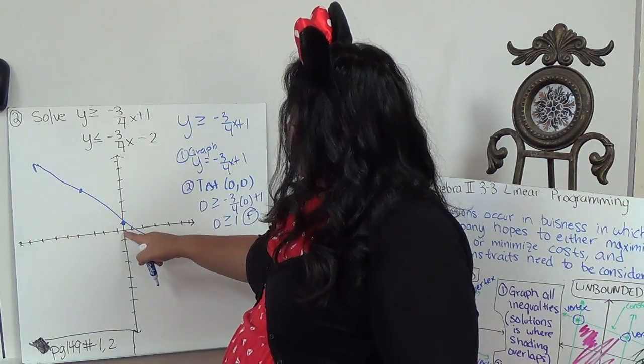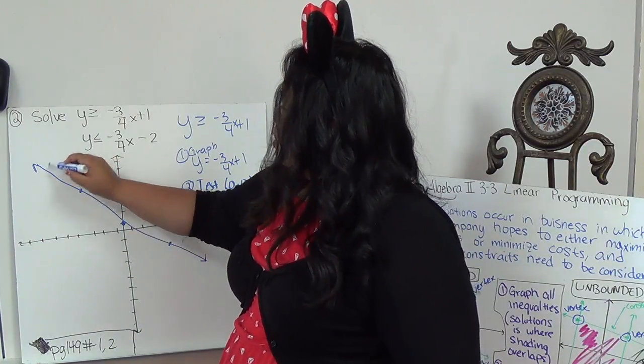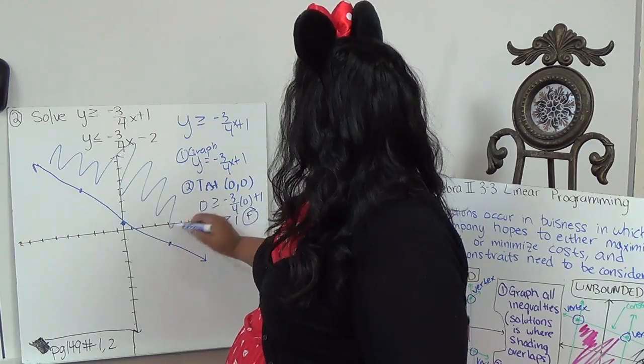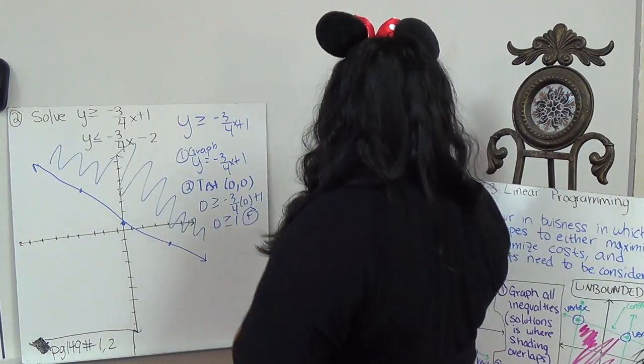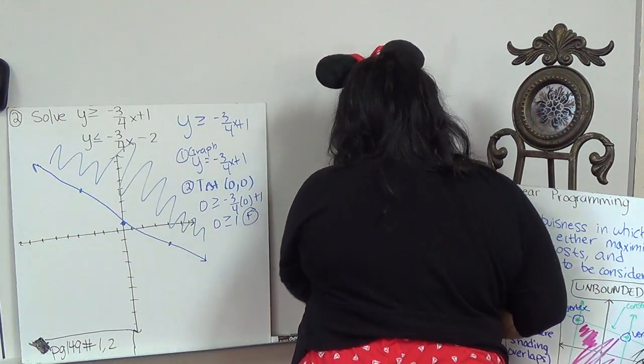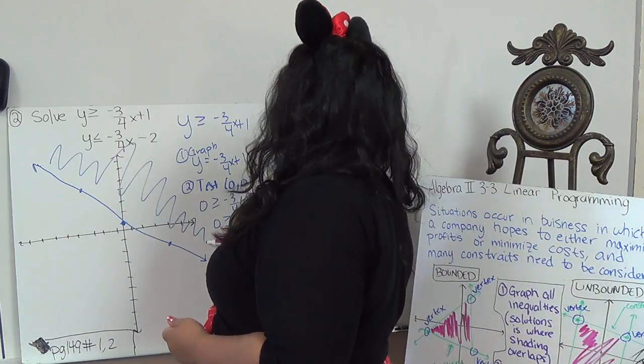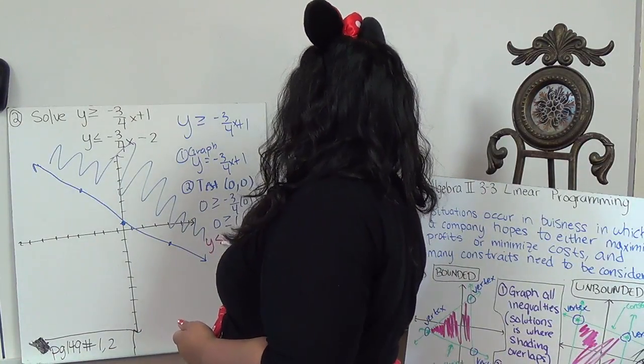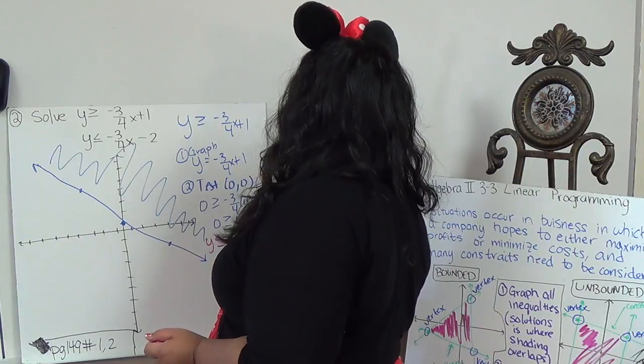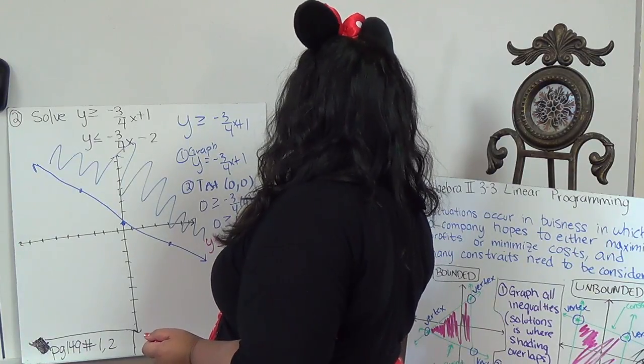Because it's false, I'm not going to shade the side with 0, 0 with the opposite side. My next equation is y is less than or equal to negative 3 fourths minus 2.